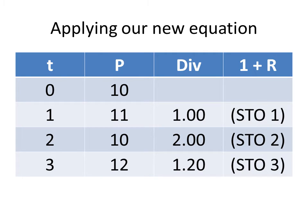Then I want you to divide by the prior price. That would be 10, the price at time 0. And right now your calculator should say 1.20. That represents 1 plus the return over period 1, which stretches from time 0 to time 1.